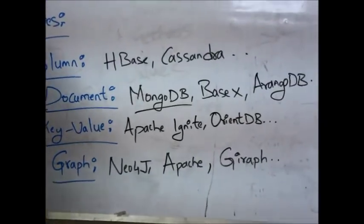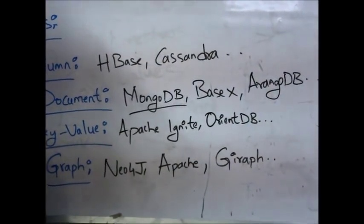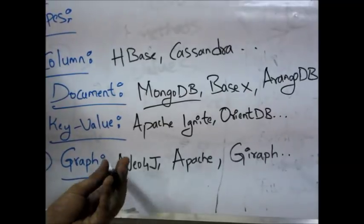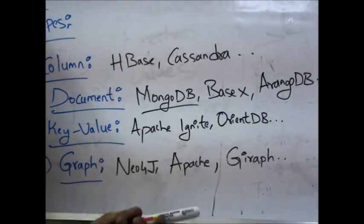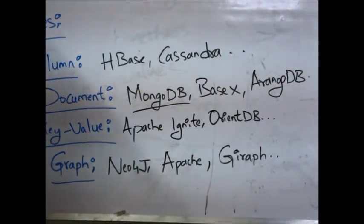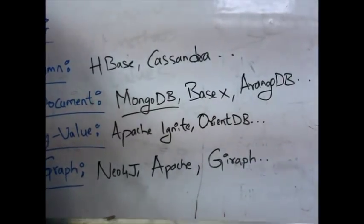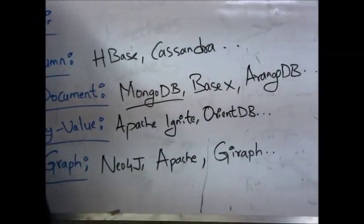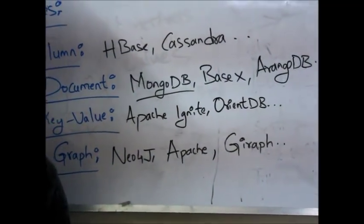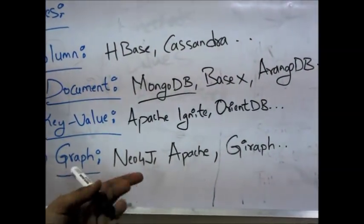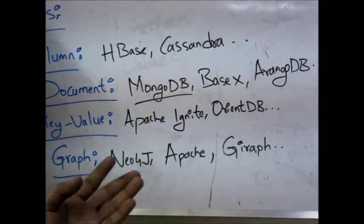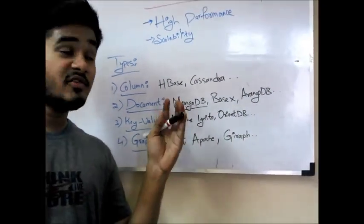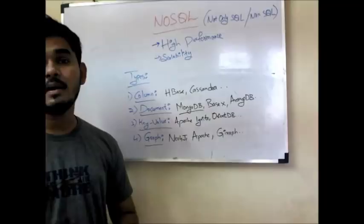Next is Key-Value. It is a dictionary way of storing values in the form of key-value pairs. The famous ones are Apache Ignite and OrientDB. And the last one is Graph-Oriented, where data is converted and transformed into graph form. The popular ones are Neo4j and Apache Graph. These are the different types of NoSQL databases.